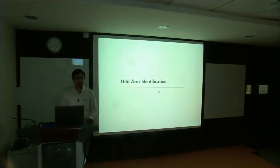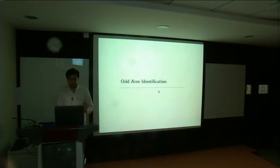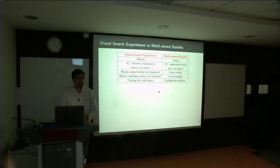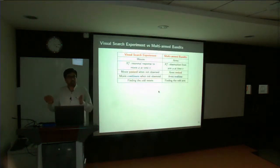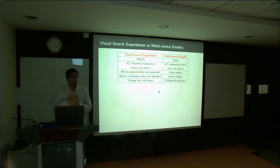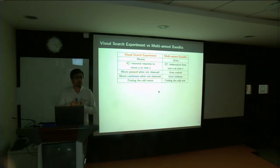So this problem of detecting the odd movie can be looked at as a problem of odd arm identification. There is a certain correspondence between this experiment and the topic called multi-arm bandits in machine learning. The movies correspond to the arms of a multi-arm bandit — think of these as levers of a slot machine.